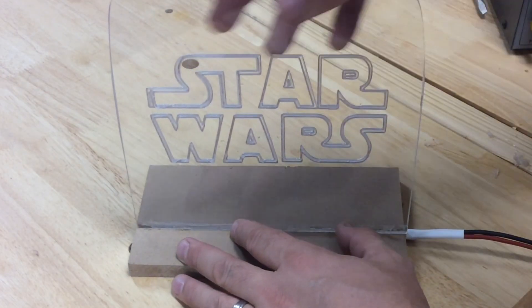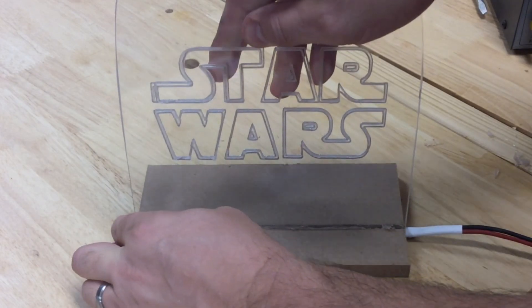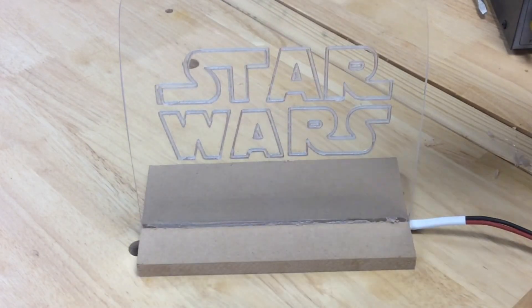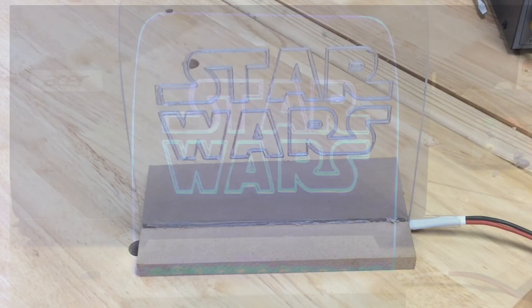Now I got a little bit of glue on the bottom of the Star Wars sign because I actually tried using hot glue to hold it in place and that was a mistake. The heat actually killed one of the LED strips.